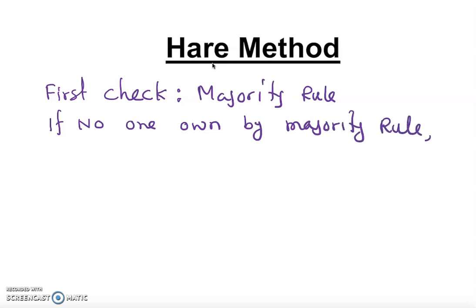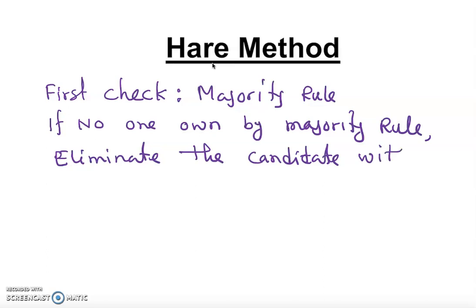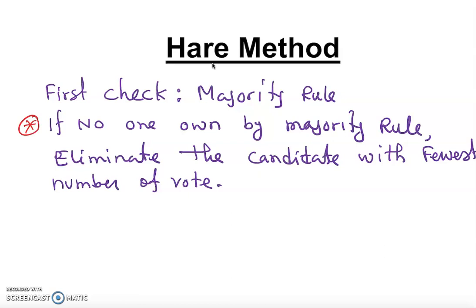If no one wins by majority rule, then we eliminate the candidate with the fewest number of votes. After eliminating, we check again — if we see a winner, we're good and we don't have to do any more. If we still don't see a winner, we do the same process again.